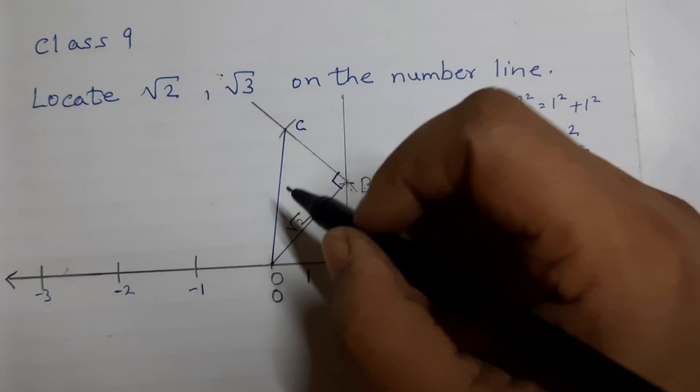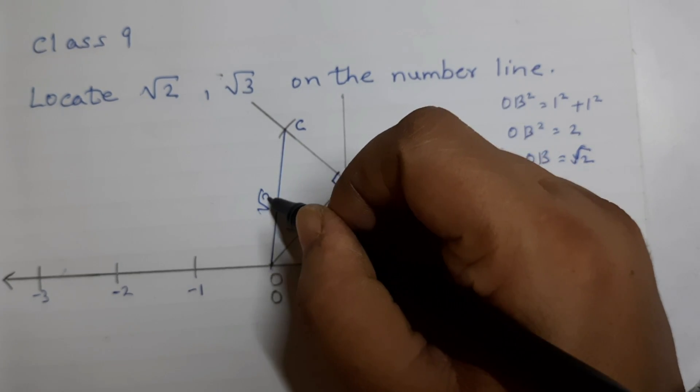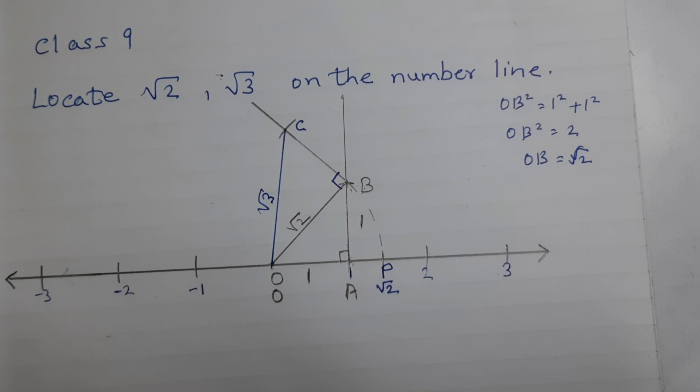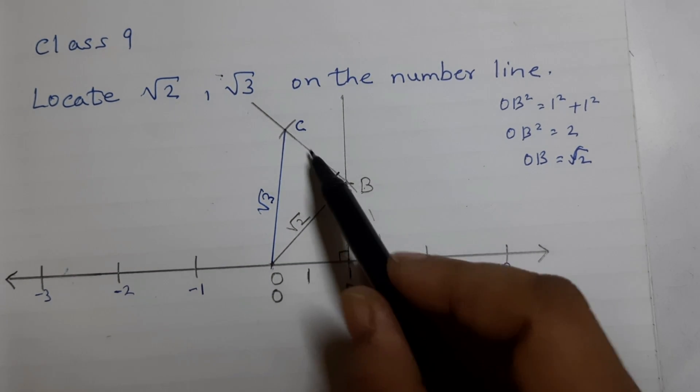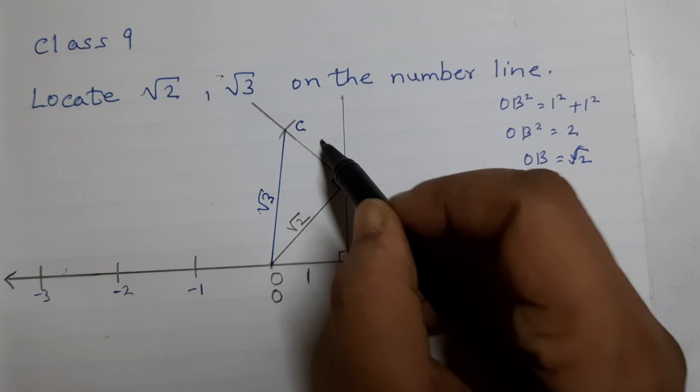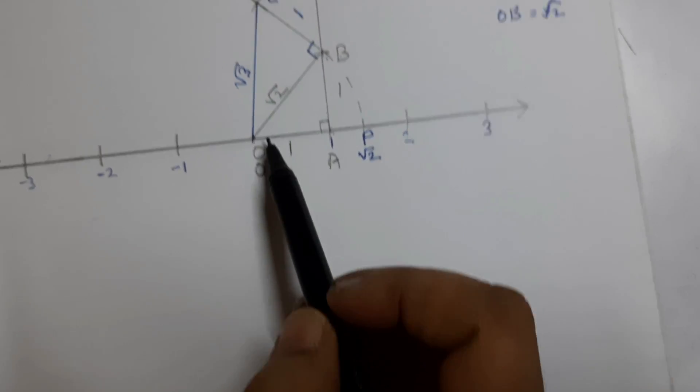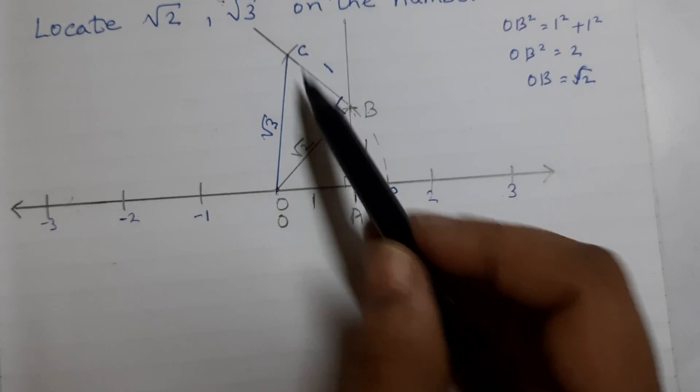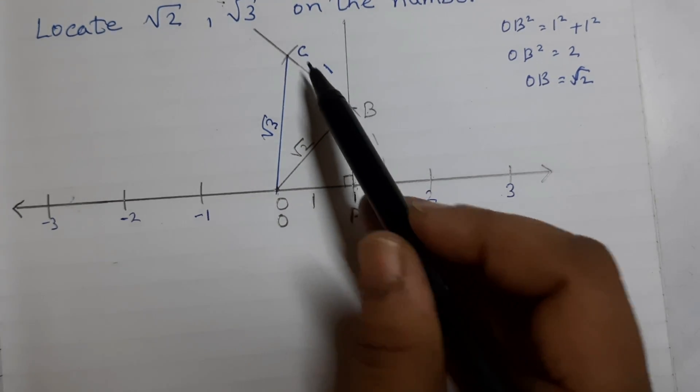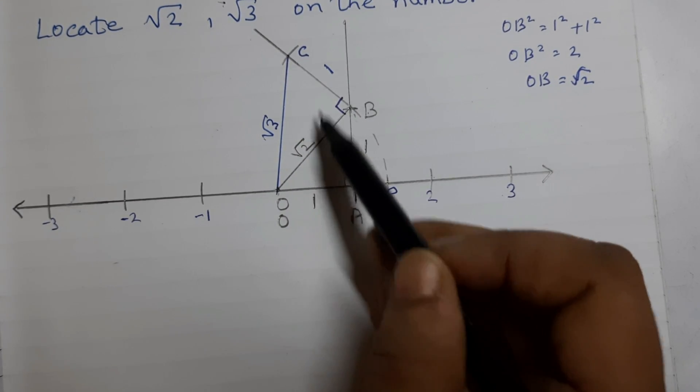Now, this length here is square root of 3. How do we know this? Because this is square root of 2. And this is unit length, which is 1. Then, using Pythagoras theorem, if you take this triangle here, O, B, C. This is square root of 2. This is 1.